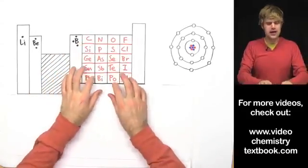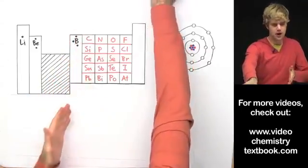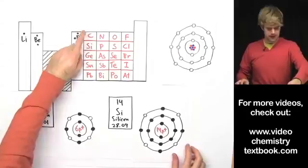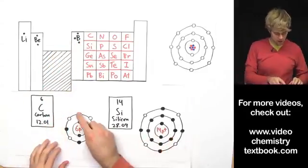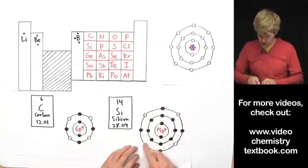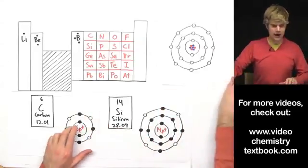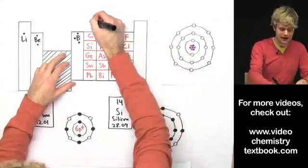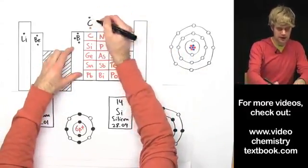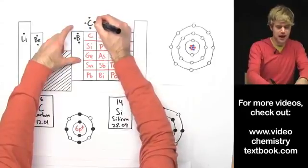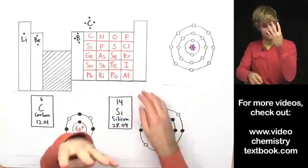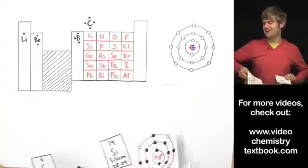This column has carbon and silicon, and each of these has four valence electrons in their outer shell. So the electron dot diagram for this column has a dot on the top, a dot on the bottom, a dot to the left, and a dot to the right — four dots total — to show that everything in this column has four valence electrons.